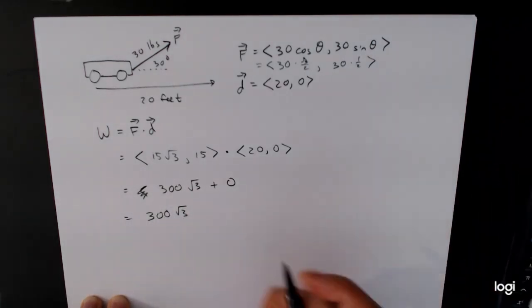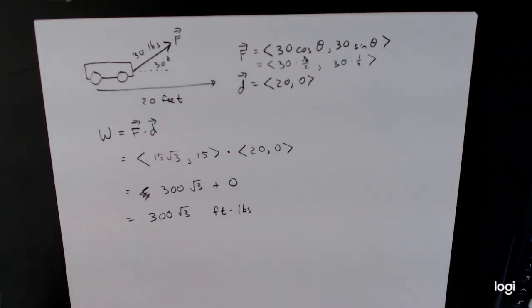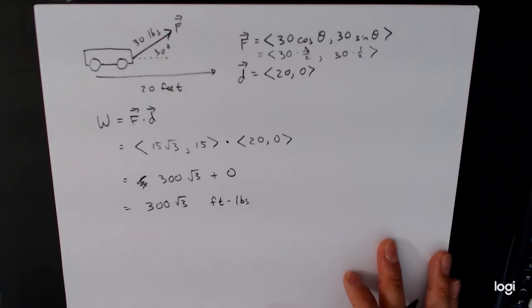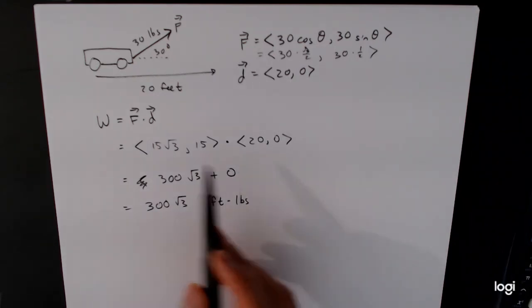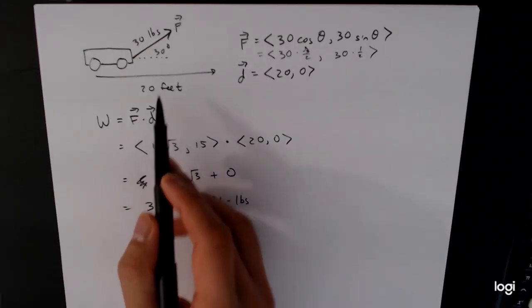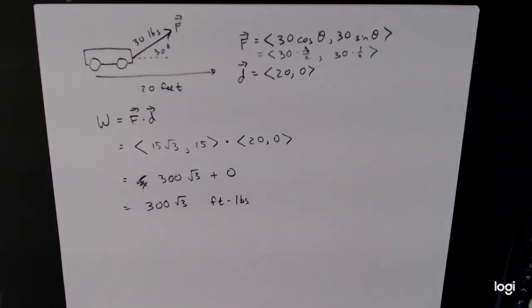The units on work is foot pounds. Now this is not something that, if you don't work in this stuff, if you don't run into it, you're not really going to understand what this is intuitively, and that's okay. Just know that we have a combination here, we have a dot product, and the units are feet and pounds. And so we put together, we call those foot pounds.